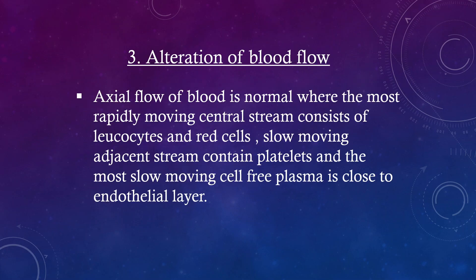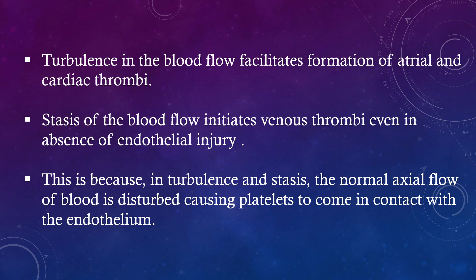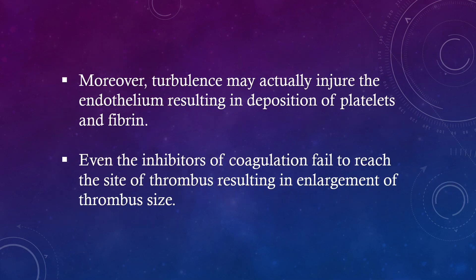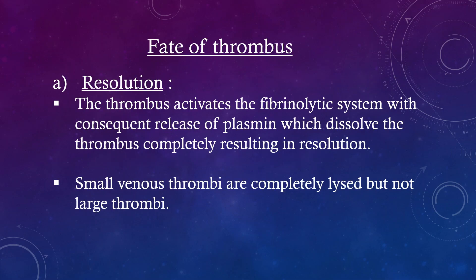Alteration of blood flow: In normal axial flow, the most rapidly moving central stream consists of leukocytes and red cells, the slow-moving adjacent stream contains platelets, and the most slow-moving cell-free plasma is close to the endothelial layer. Turbulence in blood flow facilitates formation of arterial and cardiac thrombi, while stasis initiates venous thrombi even without endothelial injury. In turbulence and stasis, the normal axial flow is disturbed, causing platelets to contact the endothelium; turbulence may injure the endothelium directly, and inhibitors of coagulation fail to reach the thrombus site, resulting in enlargement.